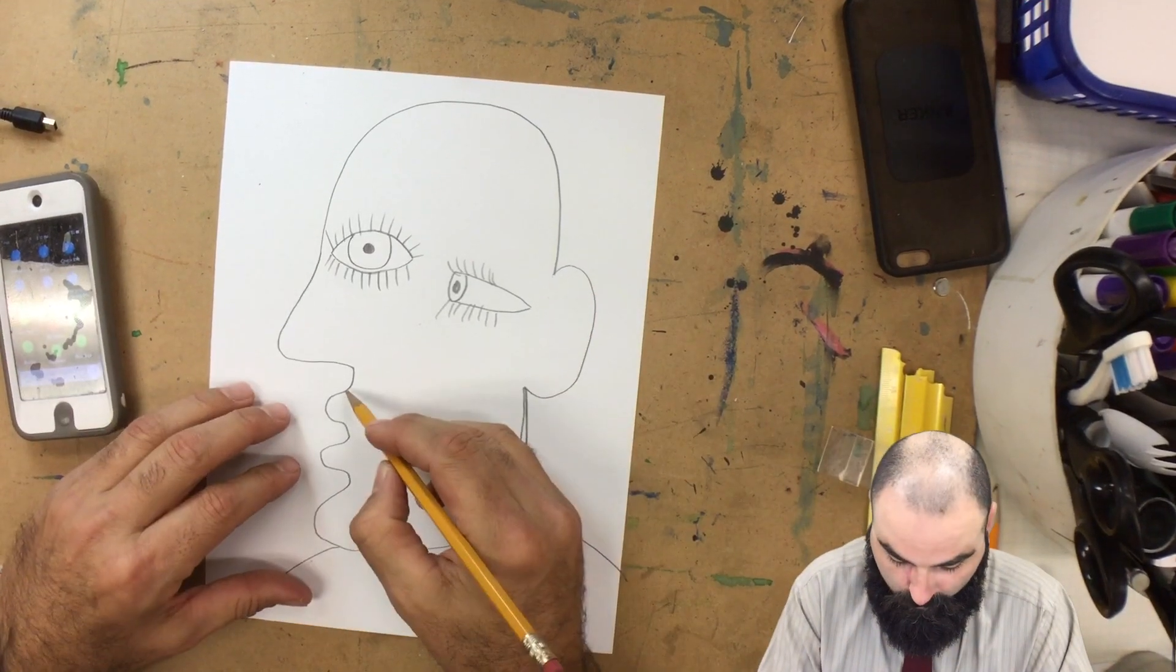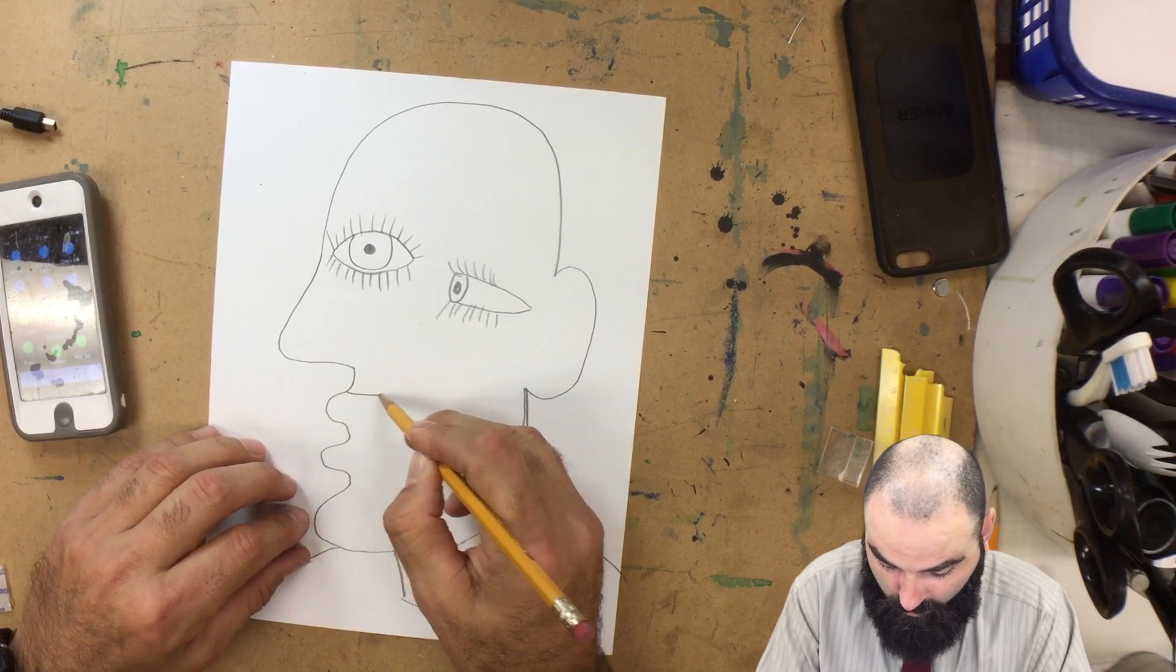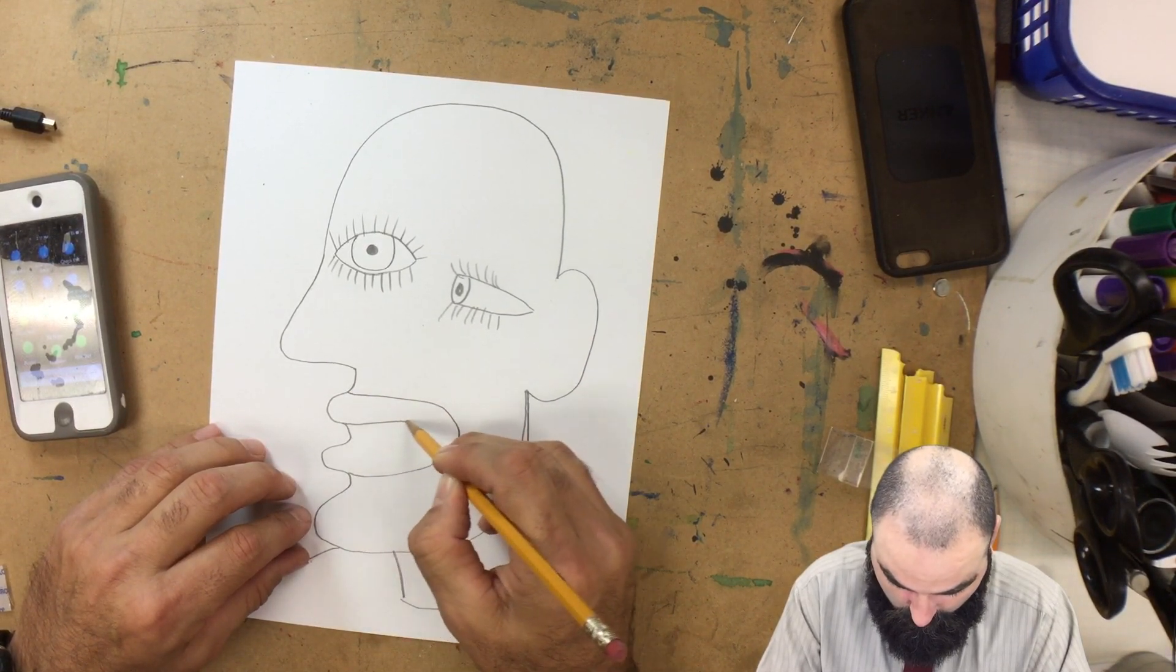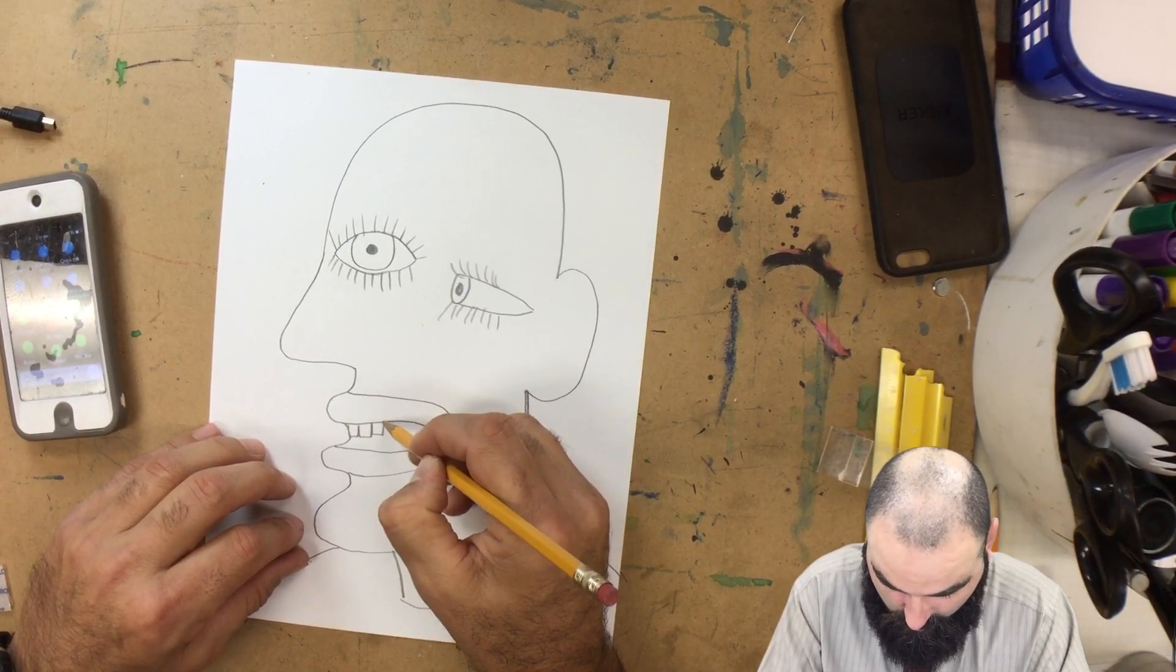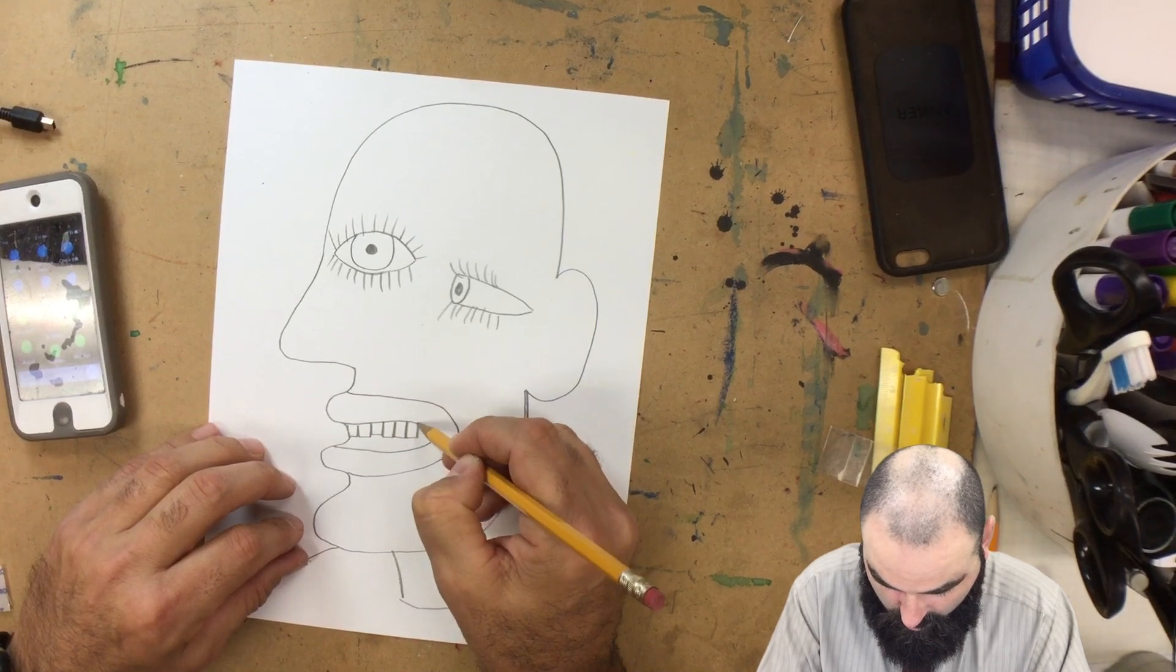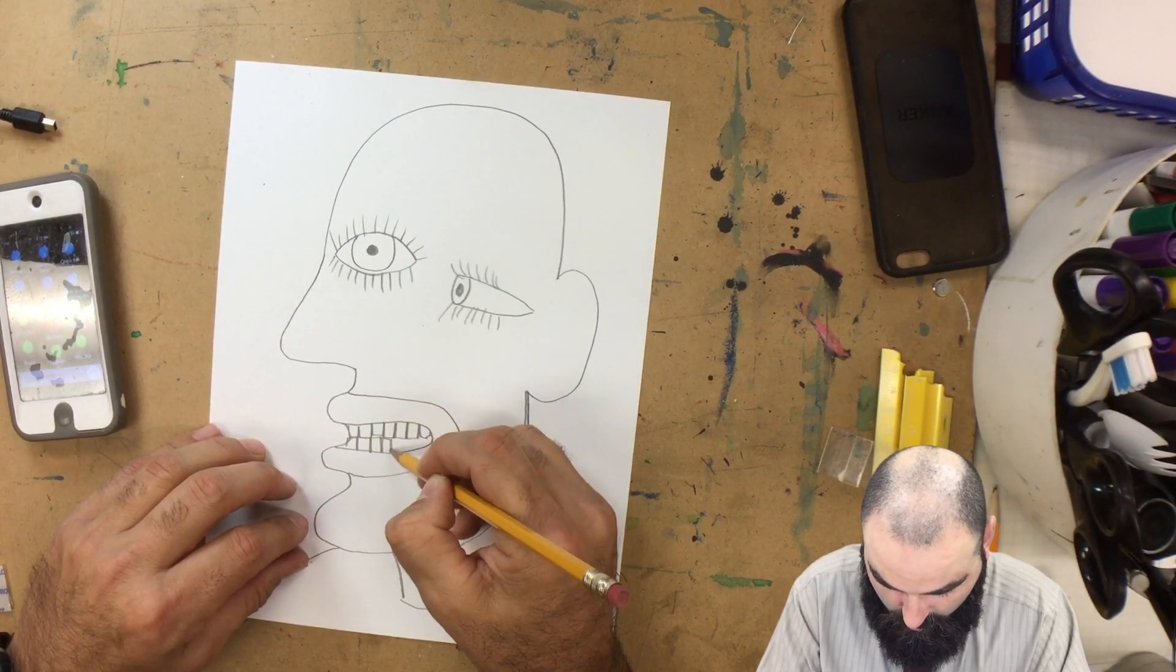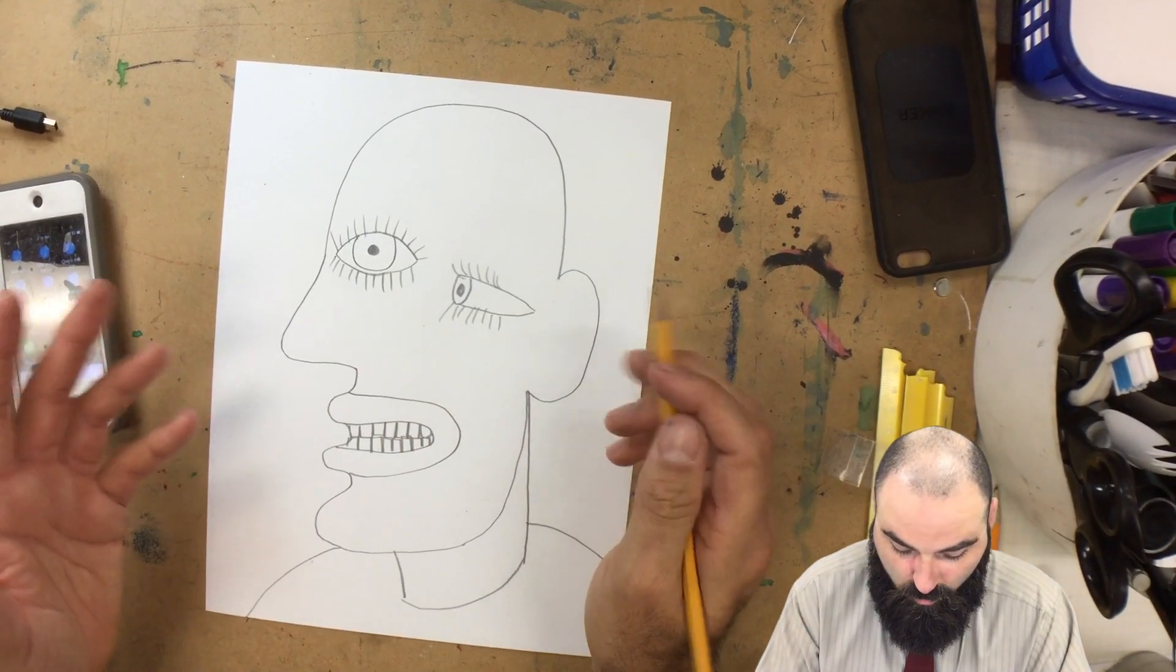We're going to do the mouth now. This is always the weirdest part of the drawing to me. So we draw the lips. And then I always like to include some teeth. They're fun to draw and they're fun to color.